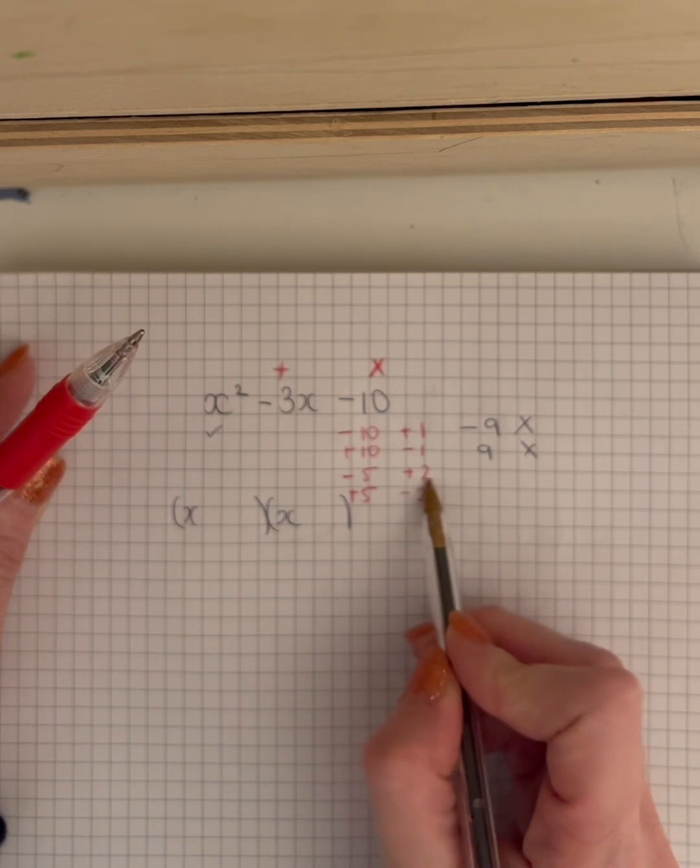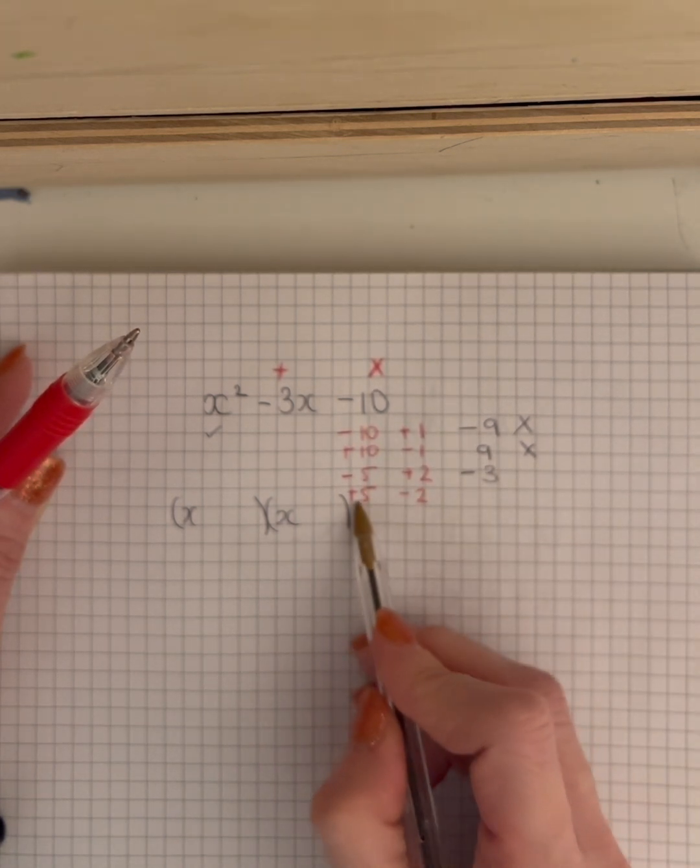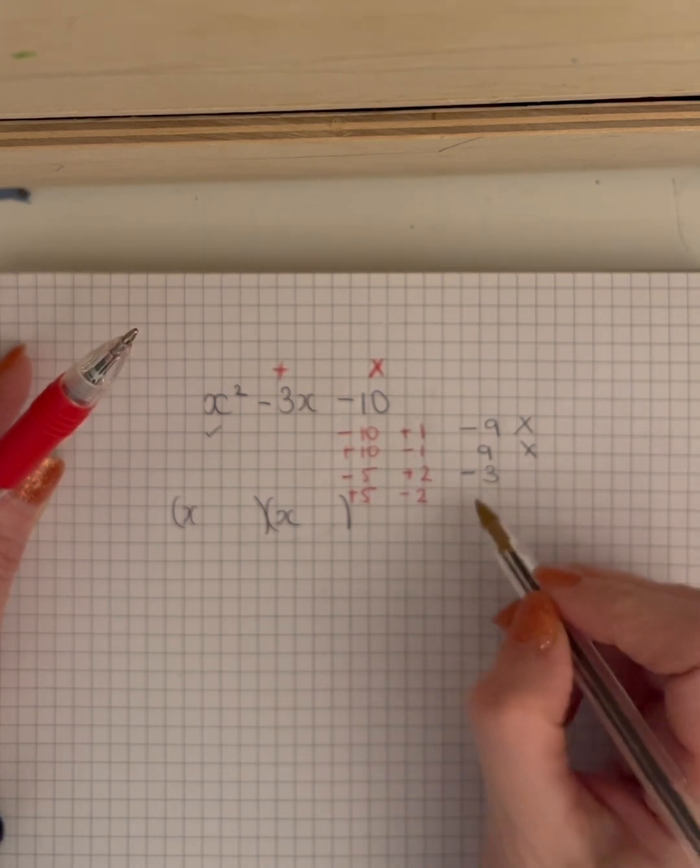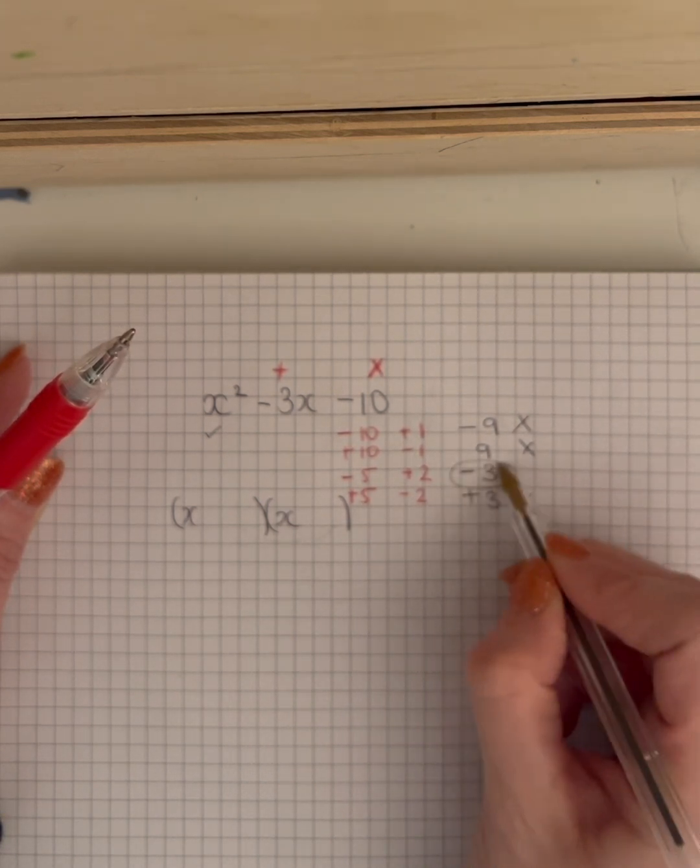But let's check the last one, 5 plus minus 2 gives me a positive 3. So the only one that's going to work is this one here.